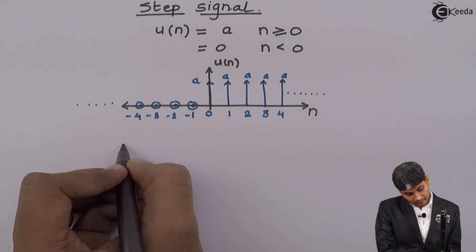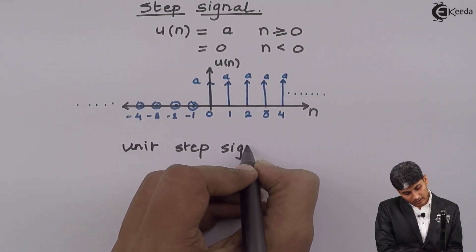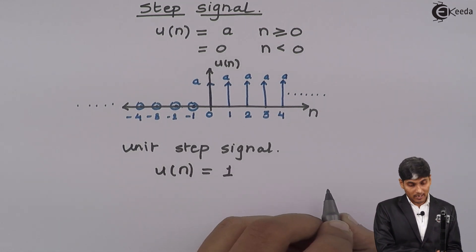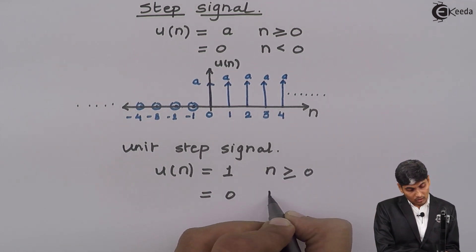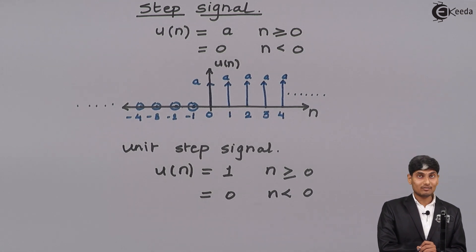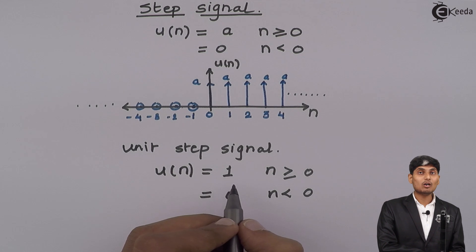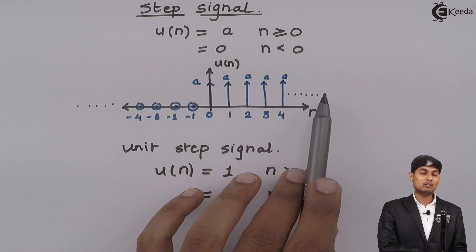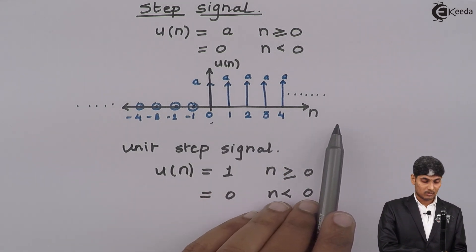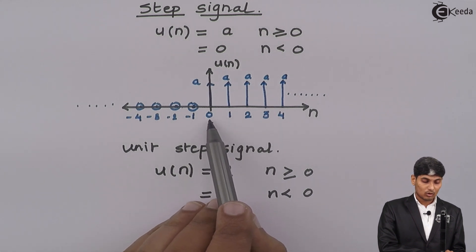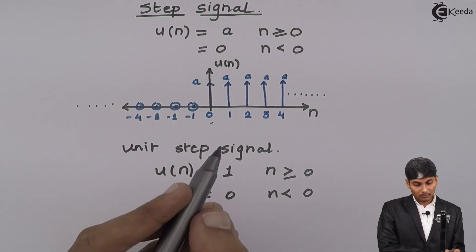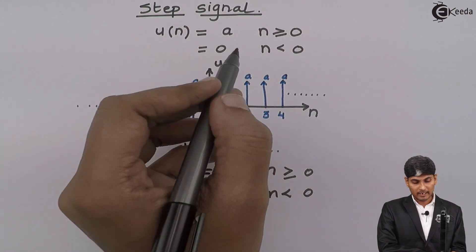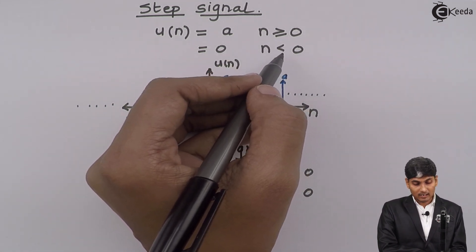Let us take another signal called the unit step signal. Unit step signal is also denoted by u of n, but it equals 1 for n greater than or equal to 0, and equals 0 for n less than 0. Same as unit impulse, here the amplitude is taken as 1. So all the a's are replaced by 1, and it equals 1 from 0 to infinity, but equals 0 from 0 to minus infinity. The condition uses strictly less than, not equal to, since one condition cannot cover both states.